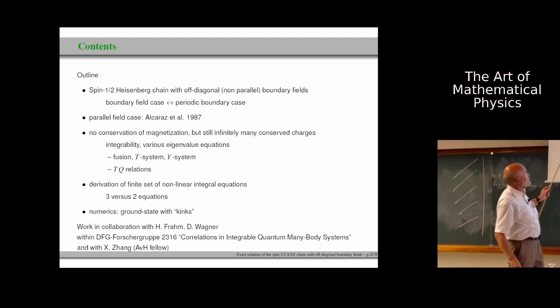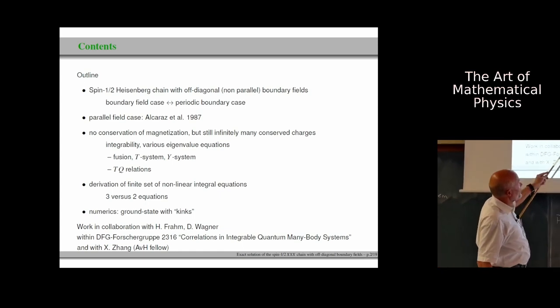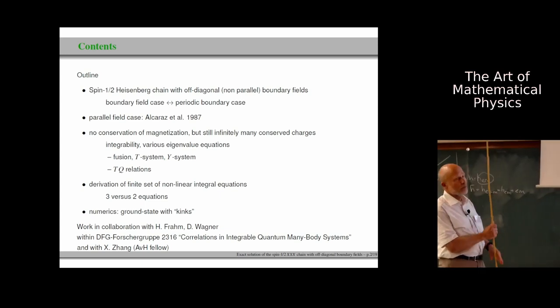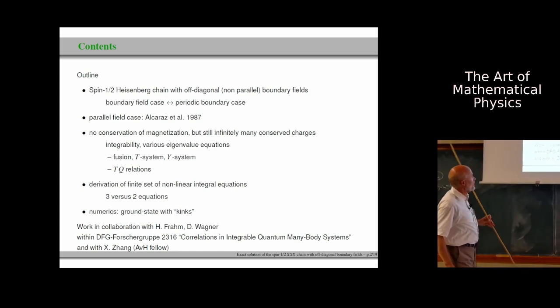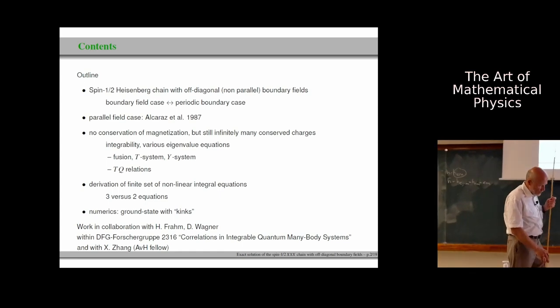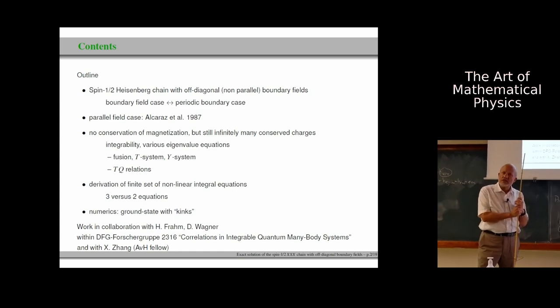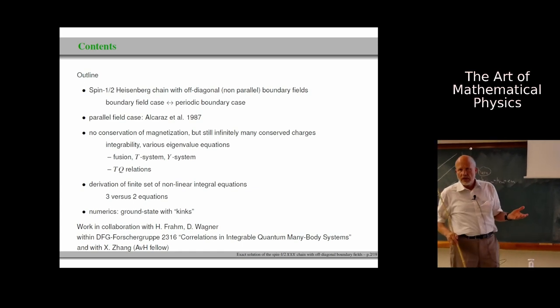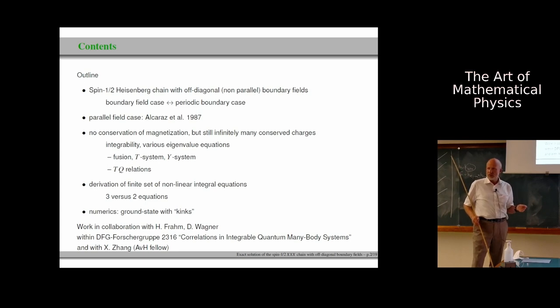The outline of the talk is, I will show to you just for completeness, the Hamiltonians of the spin-1/2 Heisenberg chain with non-parallel boundary fields. We will contrast that compared to the periodic case. There was earlier work for the parallel boundary fields by Alcaraz et al. The situation is rather curious for the spin-1 Heisenberg chain with boundary fields. Magnetization is not conserved, but the system is still integrable. So we have infinitely many conserved currents. The model is in principle solvable, but it's difficult to do so. Usually we have the opposite situation. We have some Hamiltonian, magnetization is conserved, but the system is not integrable. So it's really an annoying situation.